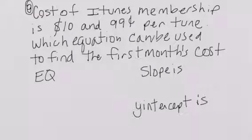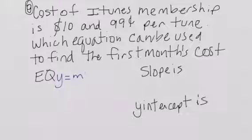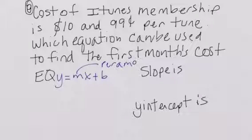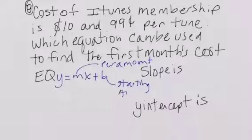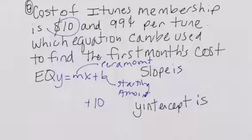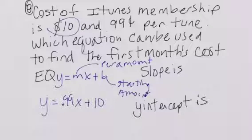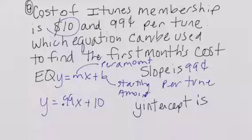The cost of iTunes membership is $0.99 per tune. Which equation can be used to find the first month's cost? Y is equal to MX plus B. The M is your per amount and B is your starting amount. In order to start an account it costs $10, and it costs $0.99 per tune. So our slope is the 99 cents per tune and the Y-intercept is the $10 starting fee.